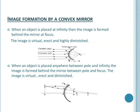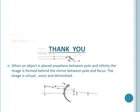Image formation in convex mirror: the first position is when the object is placed at infinity, the image is formed at the focus, and the nature of the image is virtual, erect, and highly diminished. The second position: when an object is placed anywhere between pole and infinity, the image is always formed behind the mirror between pole and focus, and the nature of the image is virtual, erect, and diminished.